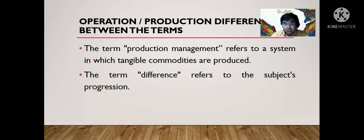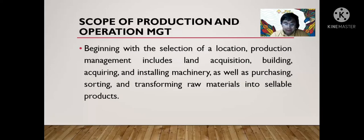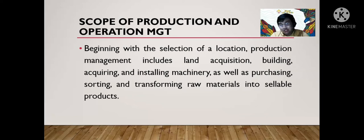The scope of production management begins with selection of location and includes land acquisition, building, acquiring and installing machinery, as well as purchasing, sorting, and transforming raw materials into sellable products.